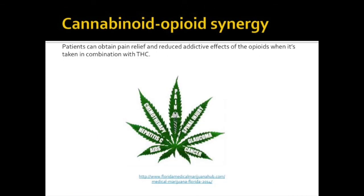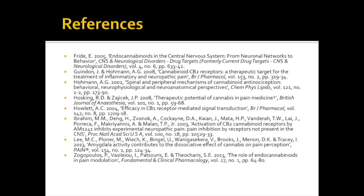Now for the cannabinoid synergy. Similar to the synergistic effect of opioids with alpha-2a agonists, there is synergy between cannabinoids and opioids. Cannabinoids seem to strengthen the effects of opioids more so than other analgesics. THC mediates its analgesic effects through delta and kappa opioid receptors. In doing so, it enhances the potency of opioids, and patients can obtain pain relief with reduced addictive effects of opioids when taken in combination with THC. Thank you.